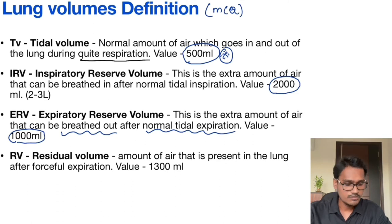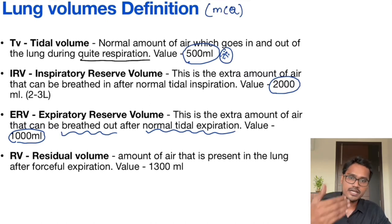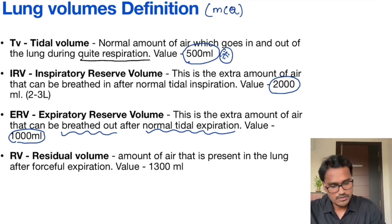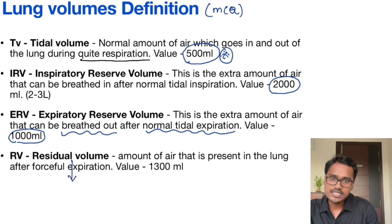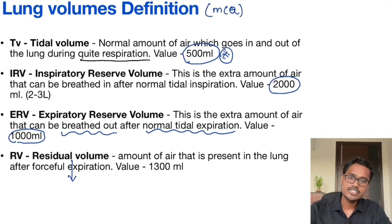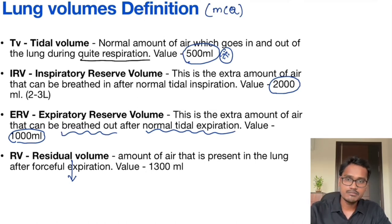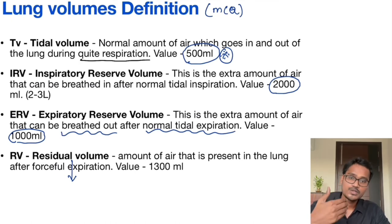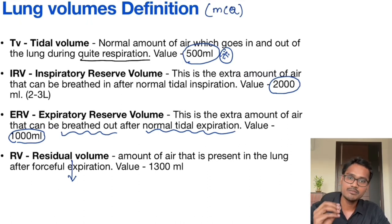Residual volume is the amount of air that is present in the lung after forceful expiration — after the expiratory reserve volume has also been taken out. Whatever volume remains in the lung is the residual volume, and it is not measured by a spirometer. The residual volume is essential because without it, all the alveoli would collapse, and every time a person breathed in it would require a very forceful effort. Like when a child is born, this residual volume is not yet there, so the child has to cry out to open the alveoli. So the residual volume helps us to prevent alveolar collapse.